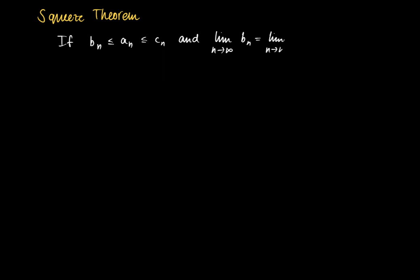And suppose that the limit of the outside sequences, so bn and cn, have the same limit. So the limit for n to infinity of bn equals the limit n to infinity of cn equals L.